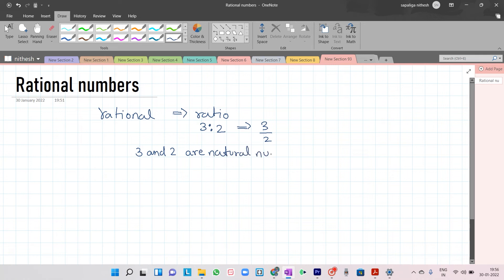Similarly, the ratio of two integers p and q, where q is not equal to 0, that is p is to q, can be written in the form of p upon q.